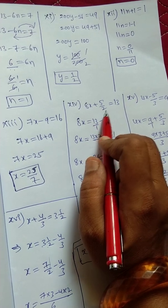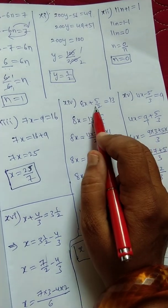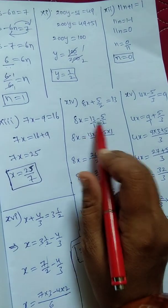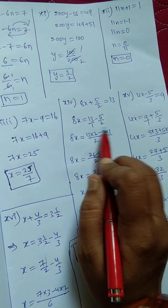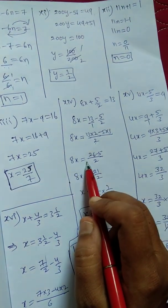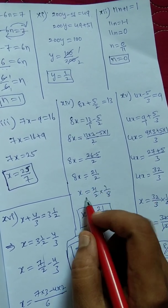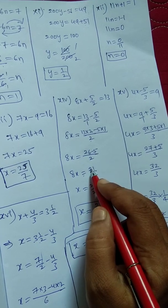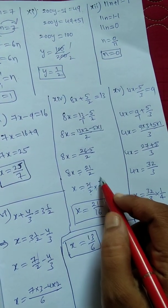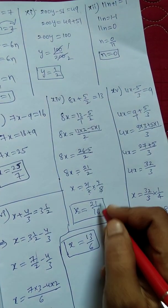Next, 14th bit: 8x plus 5 by 2 equals 13. So 8x equals 13 minus 5 by 2 — transposing. 8x equals 21 by 2. Then x equals 21 by 2 into 1 by 8 — transpose of multiplication gives division. So x equals 21 by 16.